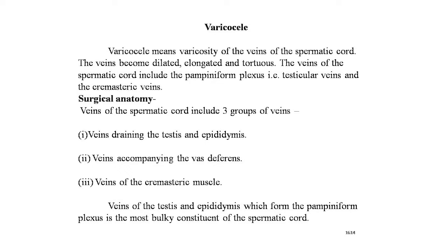Surgical anatomy: veins of the spermatic cord include three groups — veins draining the testis and epididymis (forming the pampiniform plexus, the most bulky constituent of the spermatic cord), veins accompanying the vas deferens, and veins of the cremasteric muscles.